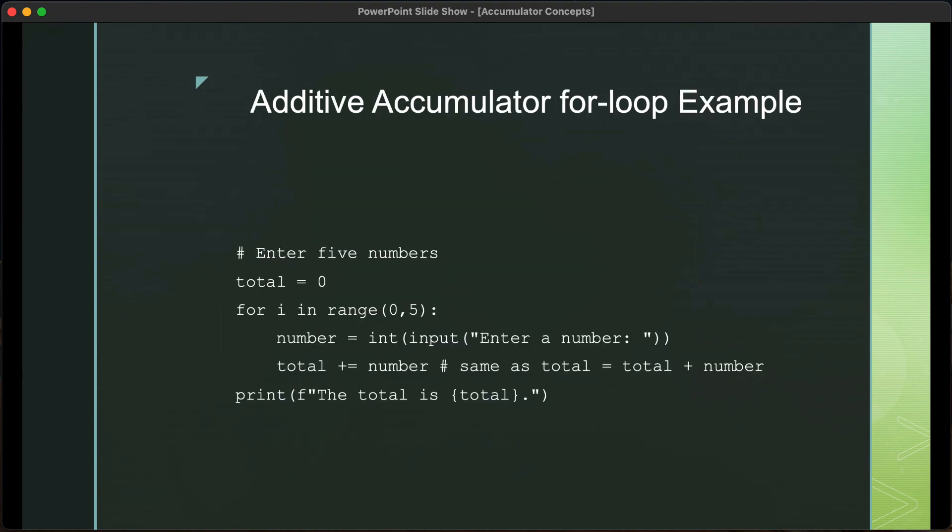So, let's take an example of a for loop. For a for loop, let's say you want to enter five numbers. And, again, because we're entering a specific number of numbers, that is five, a for loop is the appropriate structure to use. We initialize total to be zero.